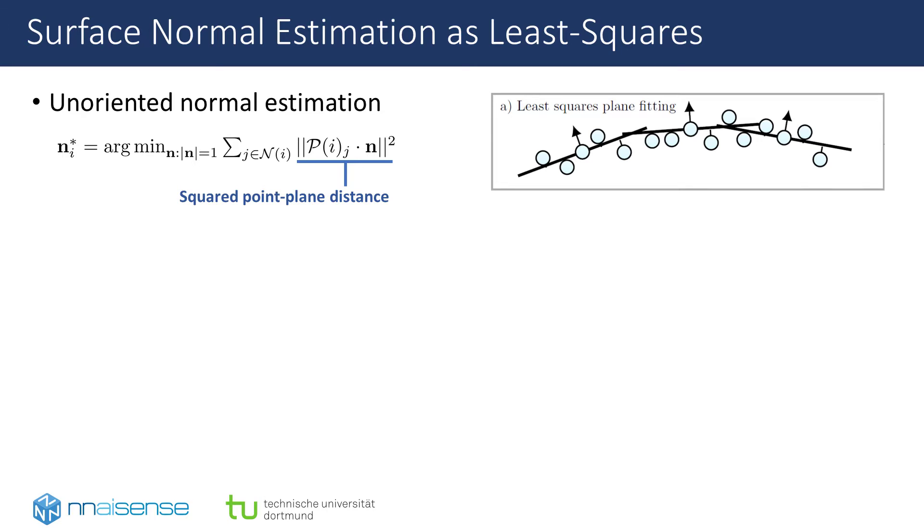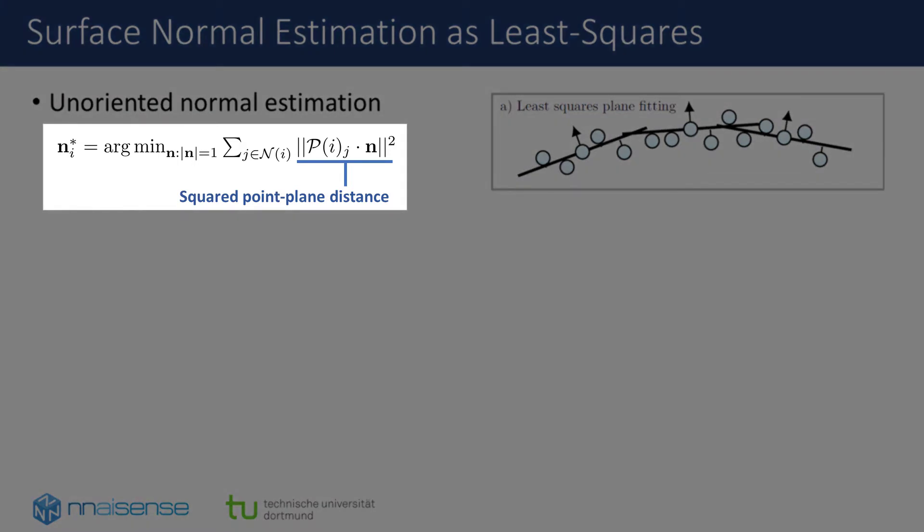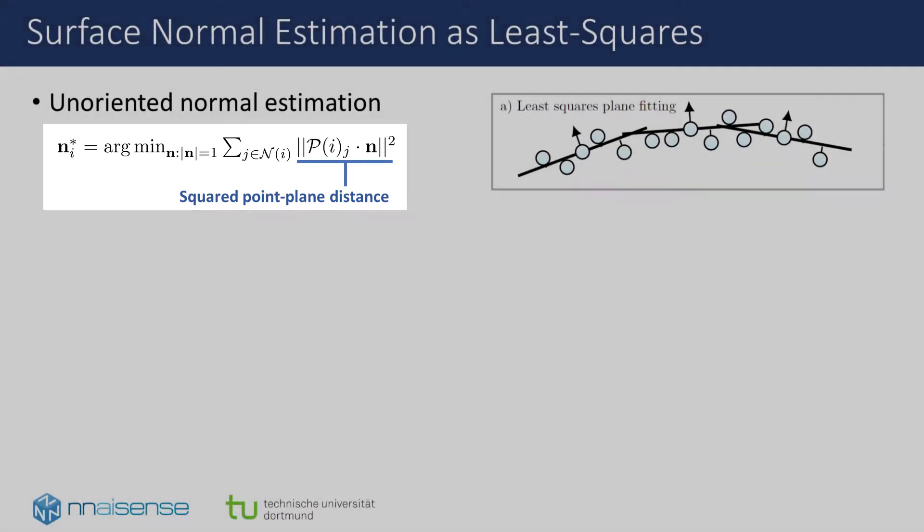Unoriented surface normal estimation on point clouds, where we determine the surface normals up to a sign flip, can be formulated as a least squares plane fitting problem. For this formulation, closed form solutions are available, for example through SVD or eigendecomposition. We calculate the normal vector of a point i that minimizes the sum of squared point-to-plane distance of points in a neighborhood around point i.